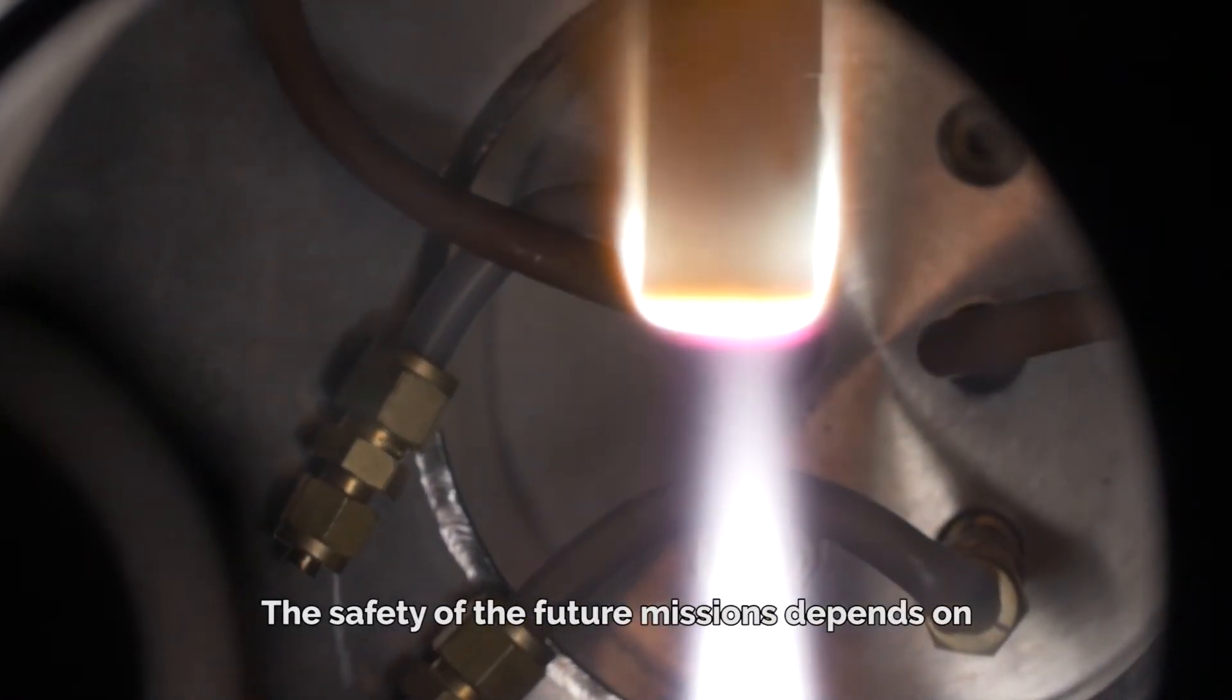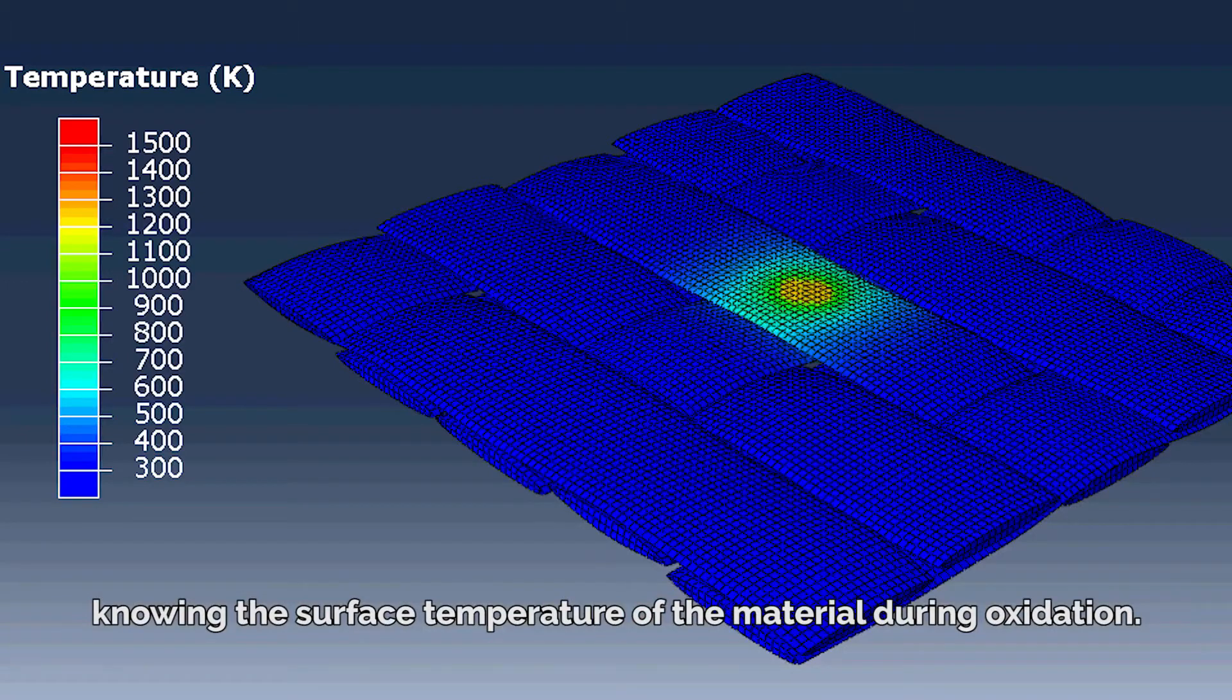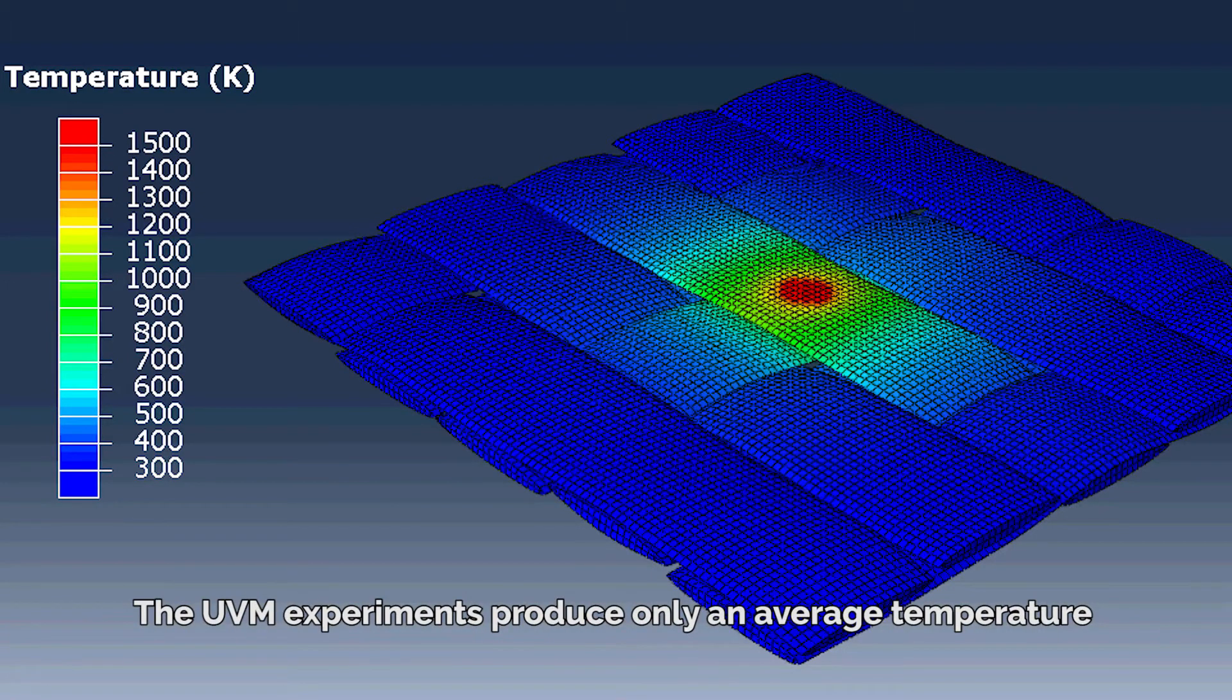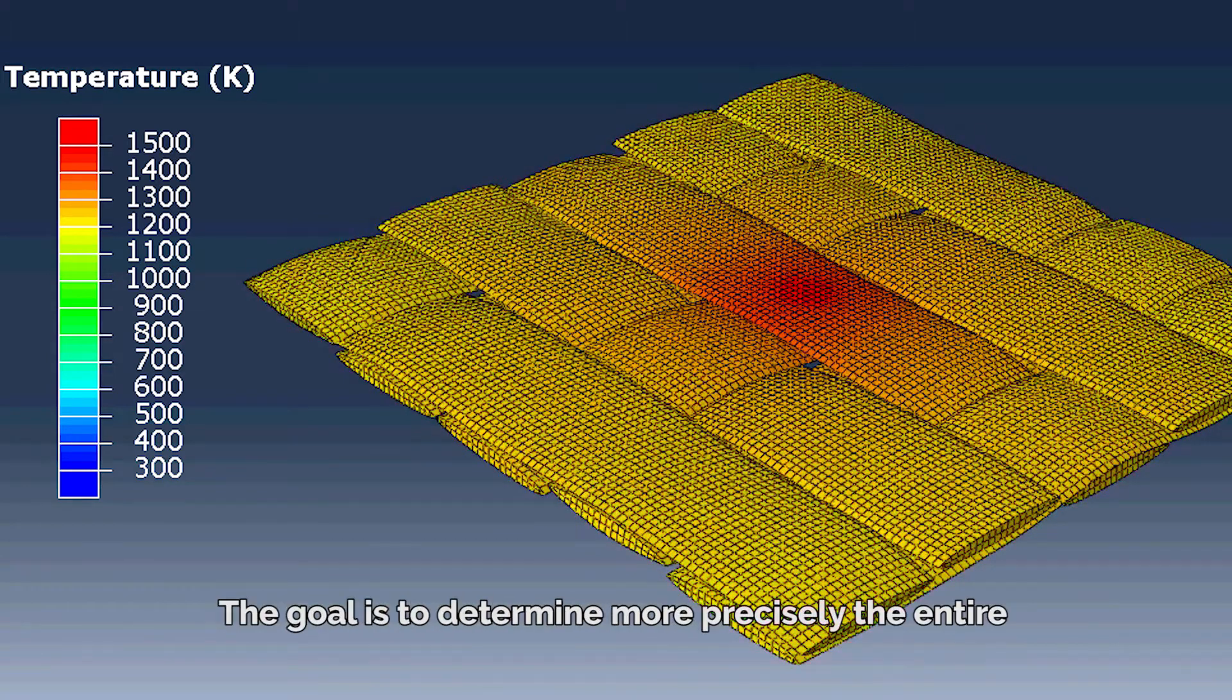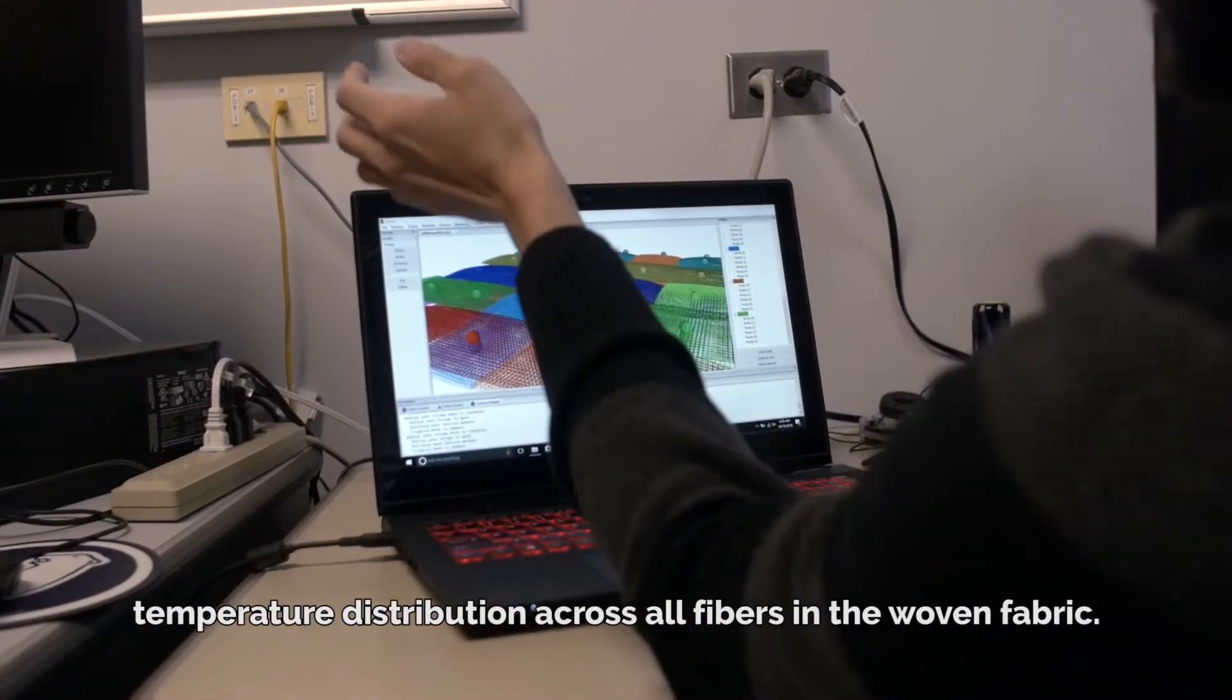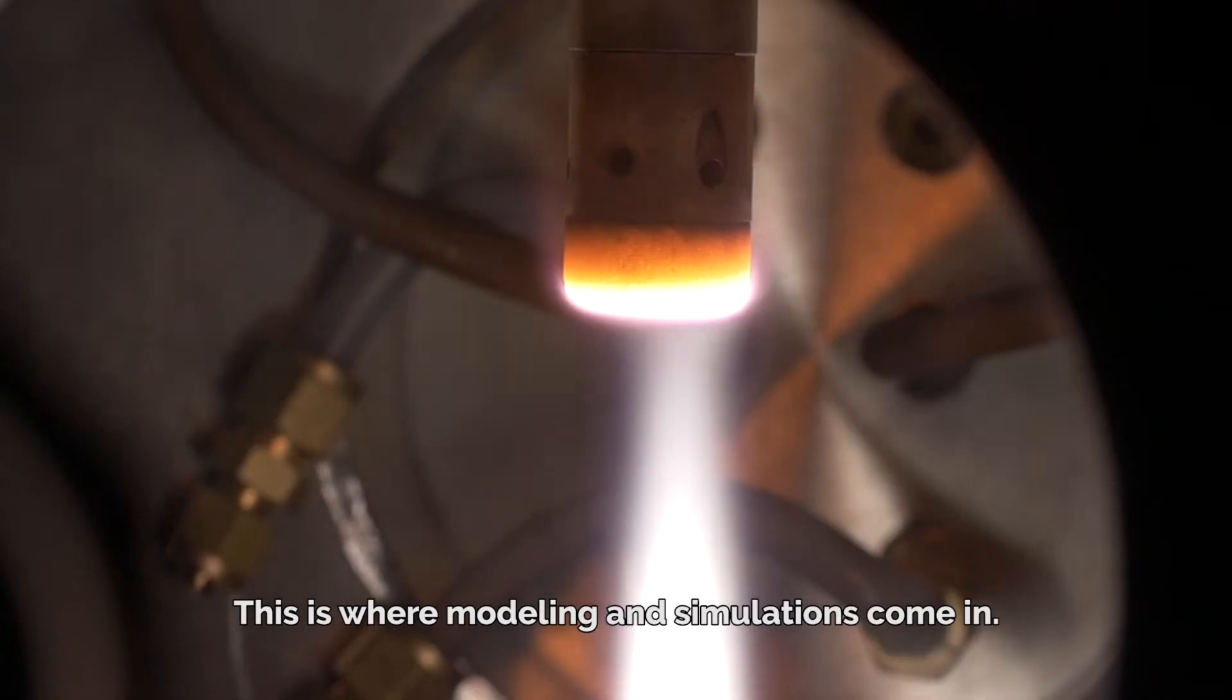The safety of the future missions depends on knowing the surface temperature of the material during oxidation. The UVM experiments produce only an average temperature over the area of the material. The goal is to determine more precisely the entire temperature distribution across all fibers in the woven fabric. This is where modeling and simulations come in.